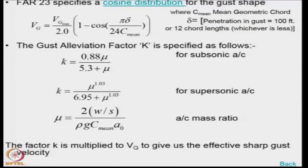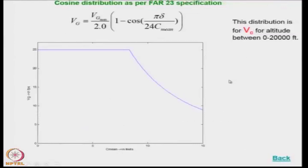To take care of that, the airworthiness regulations normally describe or prescribe a distribution that has to be considered for the gusts. For example, there is a formula for a cosine distribution. So for velocities, cruise velocity between 0 to 20,000 feet, this particular formula is to be used to look at the variation of the gust speed.